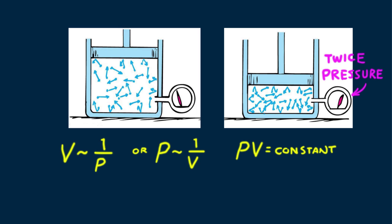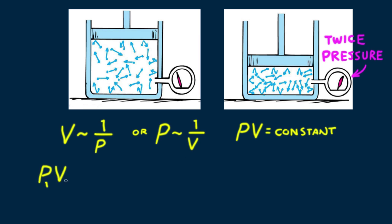If either pressure or volume of the gas varies, the other variable changes so the product PV remains the same. Another way to express this is P₁ times V₁ equals P₂ times V₂, where P₁ and V₁ represent the original pressure and volume, and P₂ and V₂ represent the second pressure and volume. Or, put more graphically, the symbol sizes tell the story: small P times big V equals big P times small V.